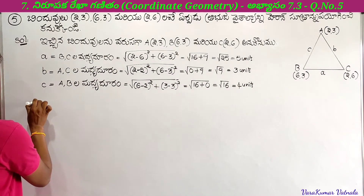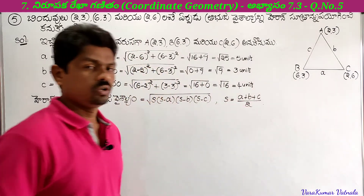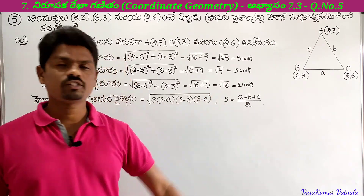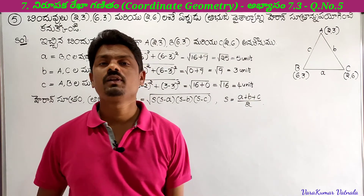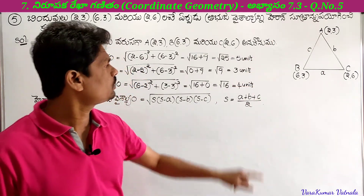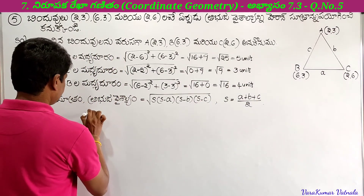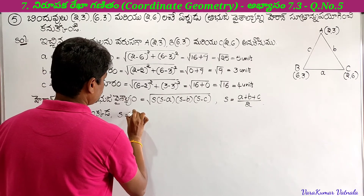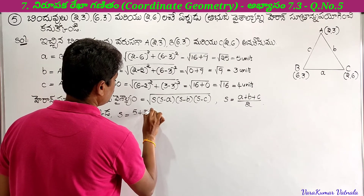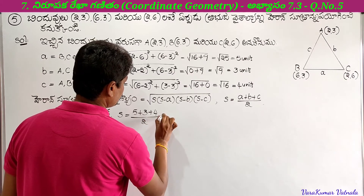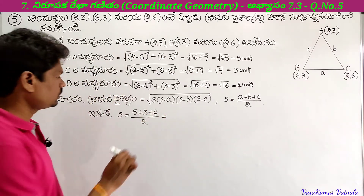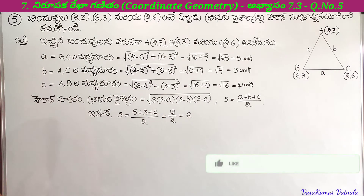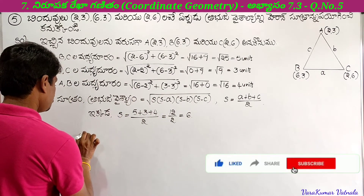Now S equals a plus b plus c by 2. The sides of the triangle are a equals 5, b equals 3, c equals 4. So S equals 5 plus 3 plus 4 by 2. 5 plus 3 equals 8, 8 plus 4 equals 12, and 12 by 2 equals 6 units. So S equals 6 units.